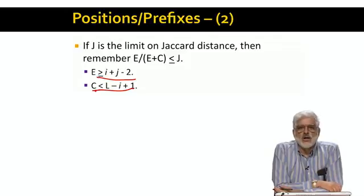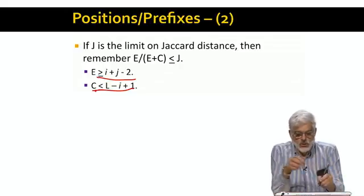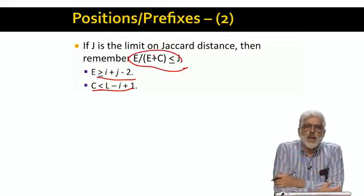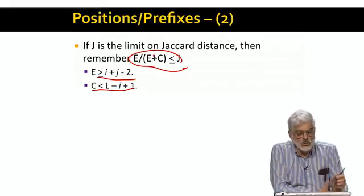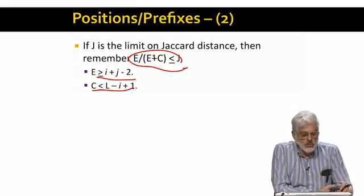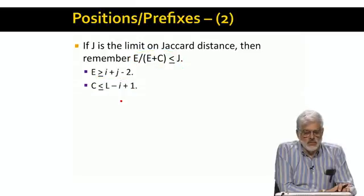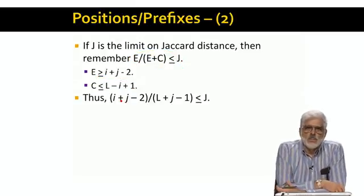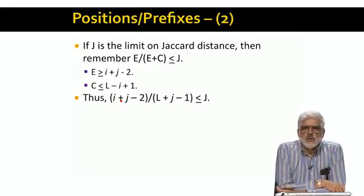Substitute I plus J minus 2 for E in the inequality E over E plus C is equal to or less than J, which is this. And substitute C equals L minus I plus 1 in the same inequality, and we get this messy formula. Trust me, that's what you get. You can work it out yourself.